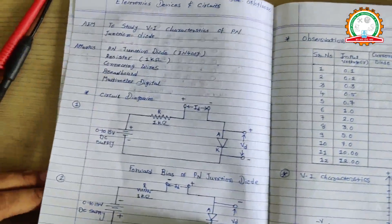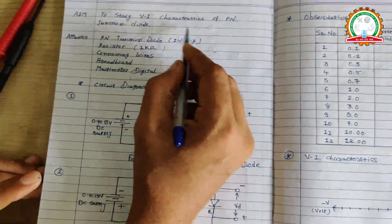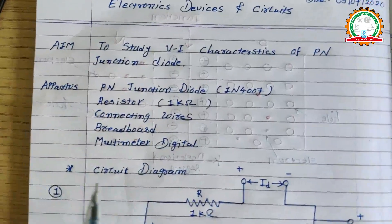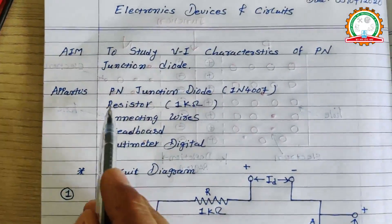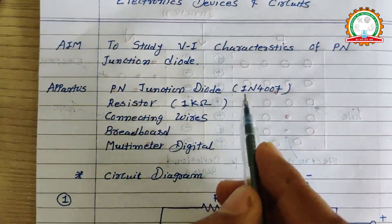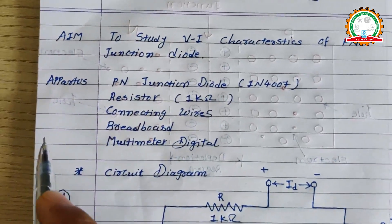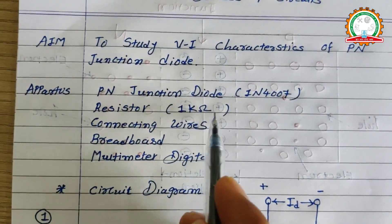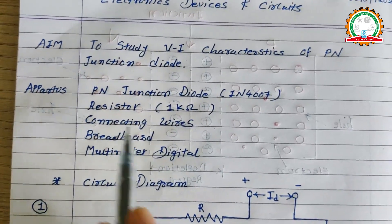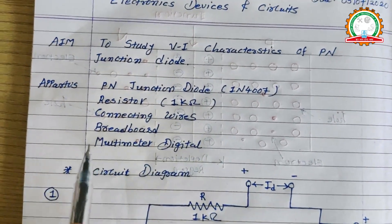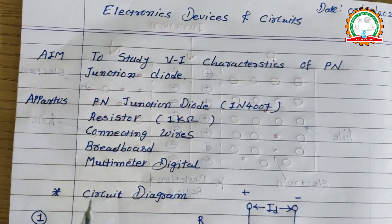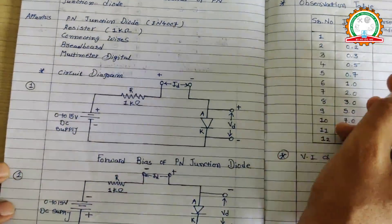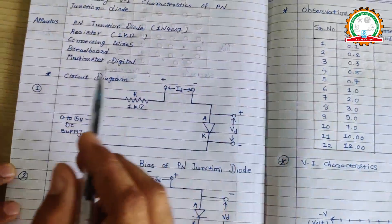To study the V-I characteristics of P-N junction diode, we require the following components. First, we require a P-N junction diode with the name 1N4007, one resistor with a value of 1 kilo ohm, some connecting wires, a breadboard, and a multimeter to measure current as well as voltage.